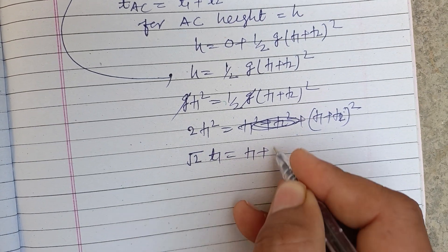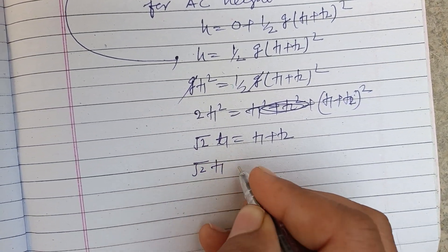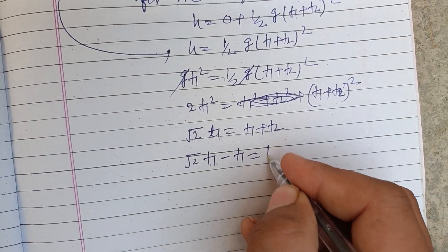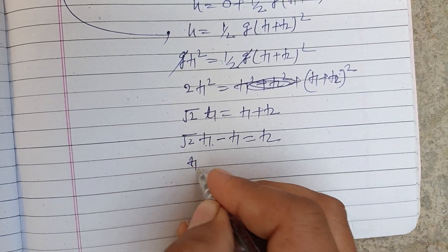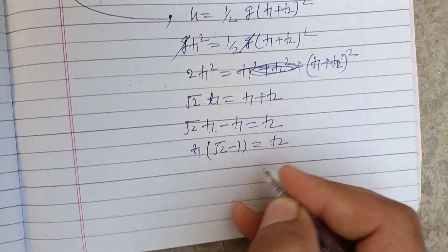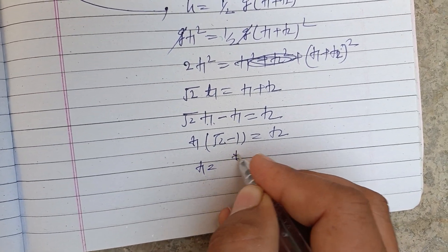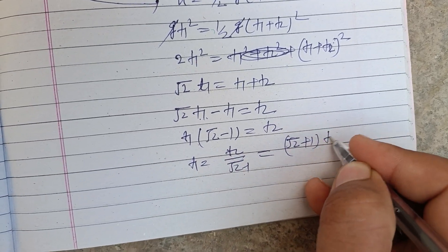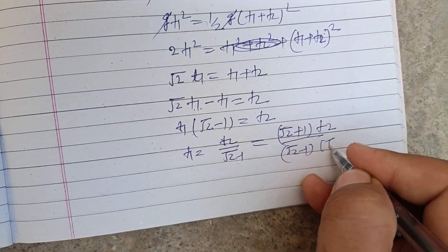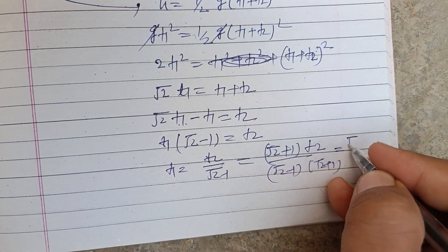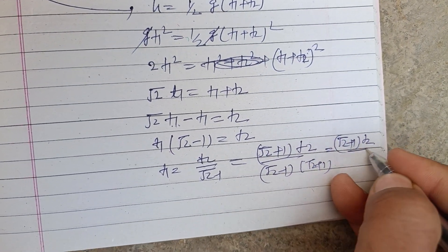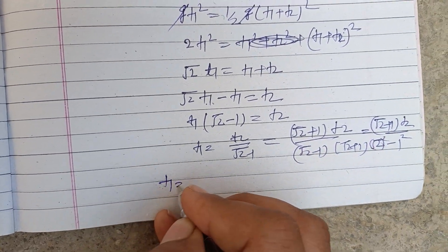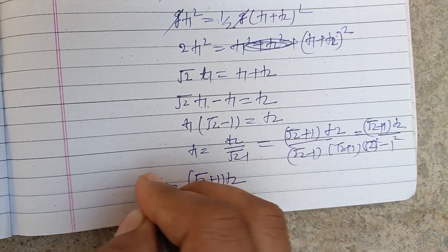Taking the square root of both sides: √2·t1 = t1 + t2. Rearranging: √2·t1 − t1 = t2, so t1(√2 − 1) = t2, giving t1 = t2 / (√2 − 1). Multiplying numerator and denominator by (√2 + 1), we get t1 = (√2 + 1)·t2.